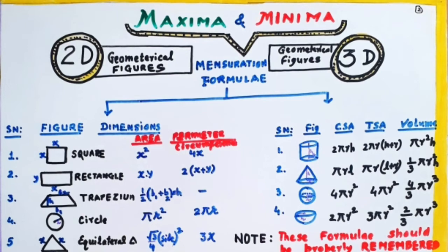Then equilateral triangle, root 3 by 4, side square, and perimeter is 3x.